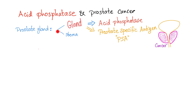The prostate gland consists of gland and stroma. These glands are branching tubulo-alveolar glands, arranged in lobules and surrounded by stroma. These glands have epithelium, which secretes acid phosphatase as well as prostate-specific antigen, PSA.